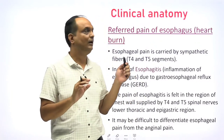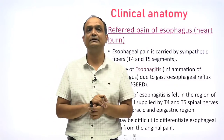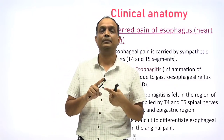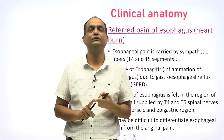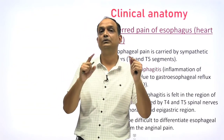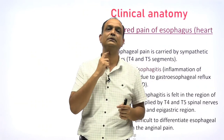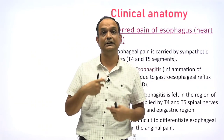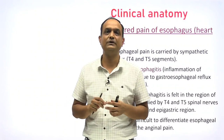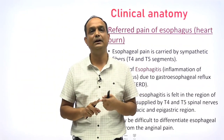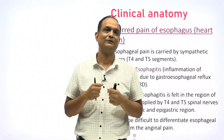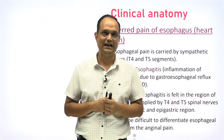In summary, we discussed: the length of the esophagus (25 cm); its course divided into cervical, thoracic, and abdominal regions; blood supply; venous drainage; and nerve supply. Clinical anatomy will be discussed in the second phase of this lecture. Thank you.